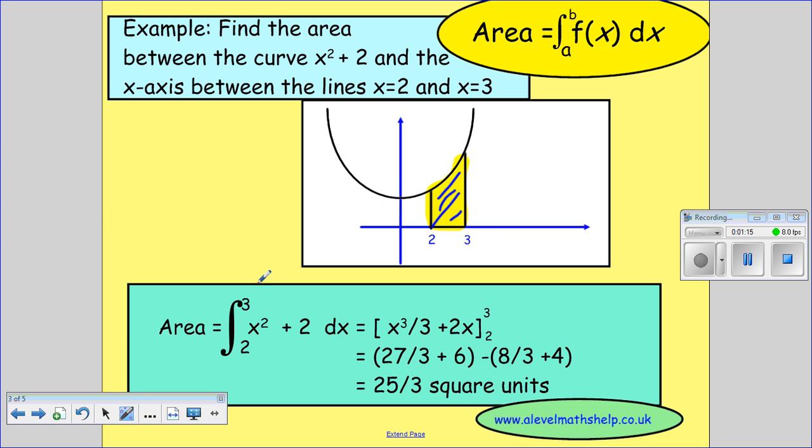So we integrate between 2 and 3. So our limits are from 2 to 3. And we integrate f of x, which is the same as y, which is basically the equation of our curve. So that's x squared plus 2 dx.